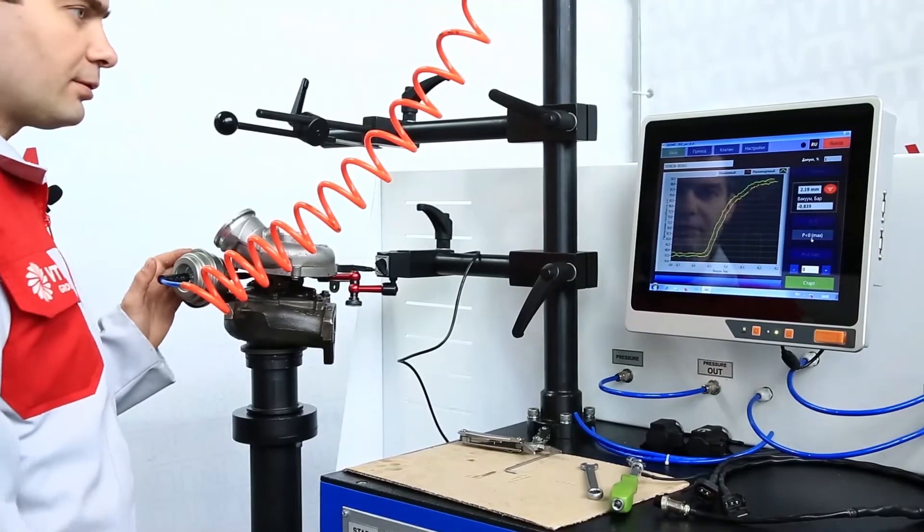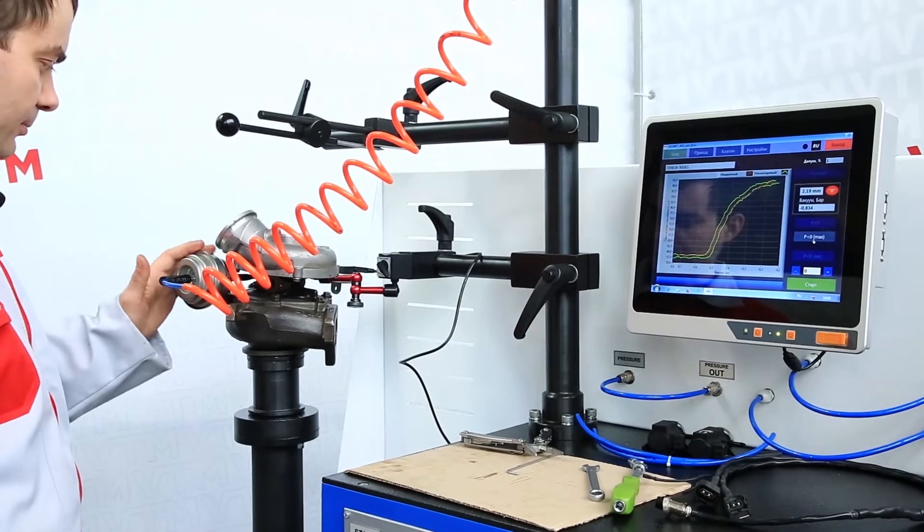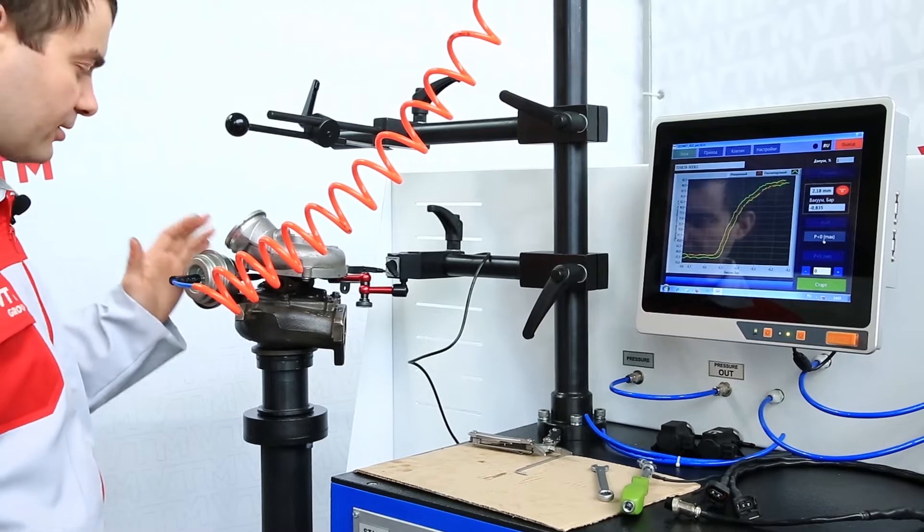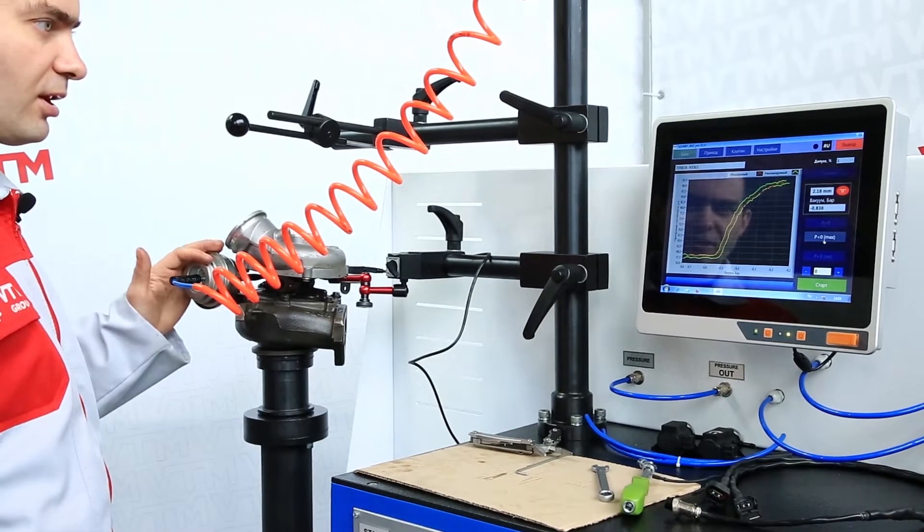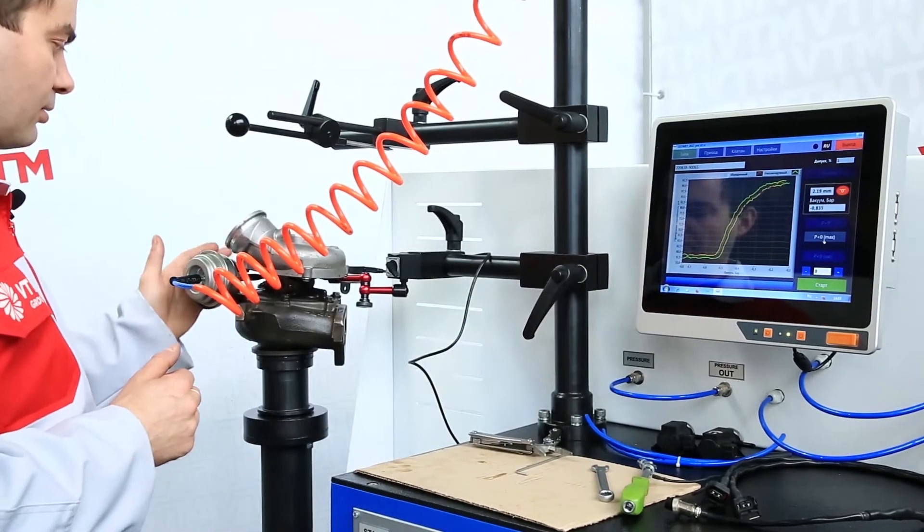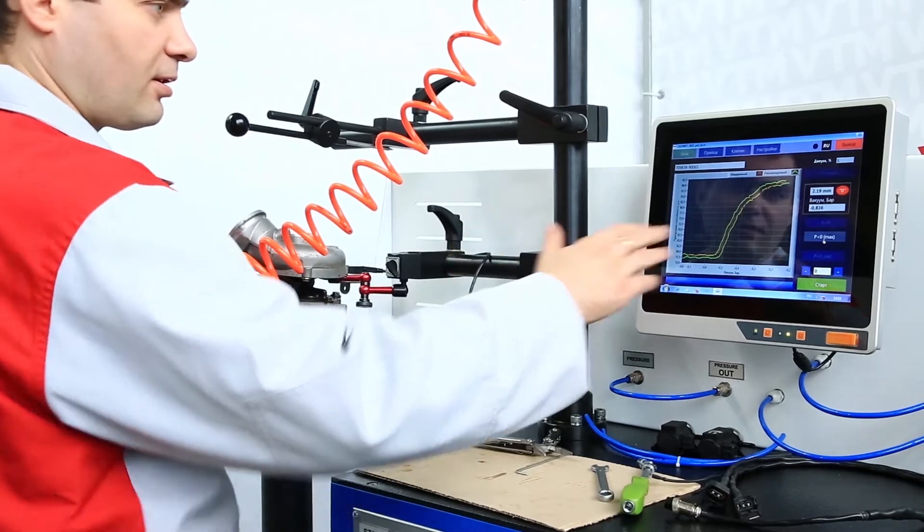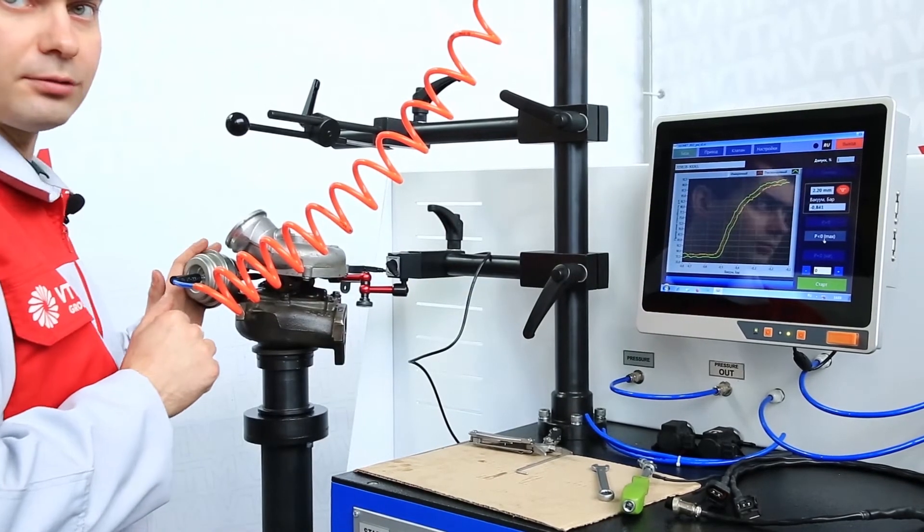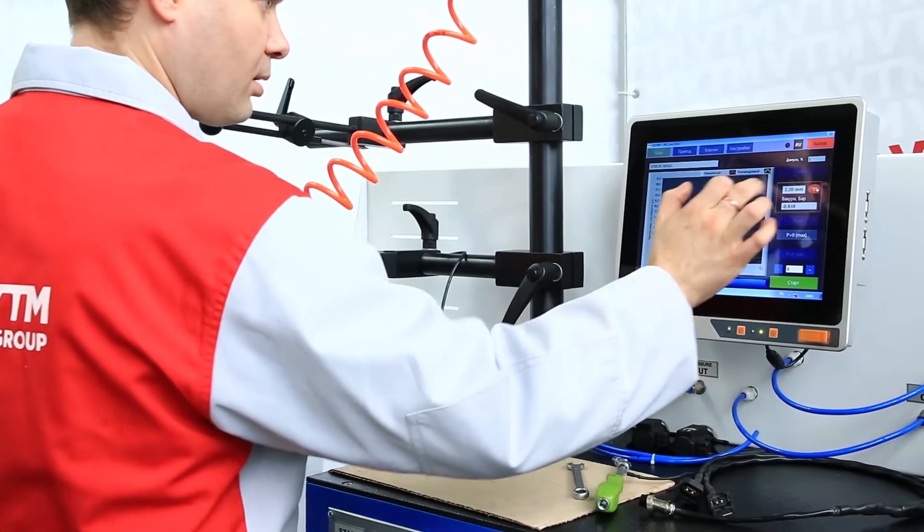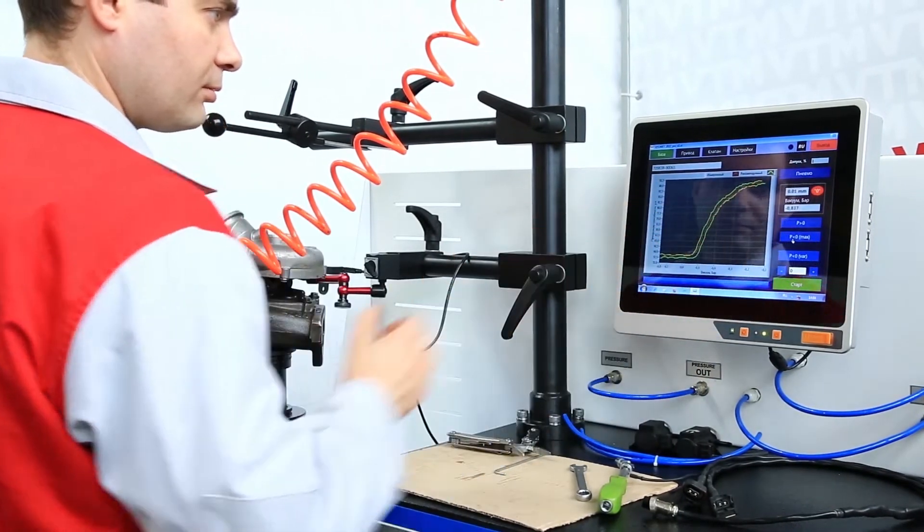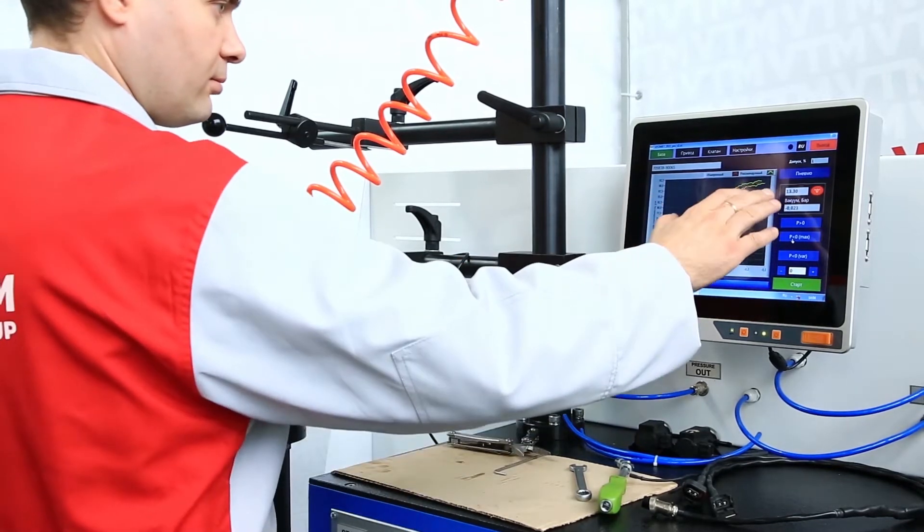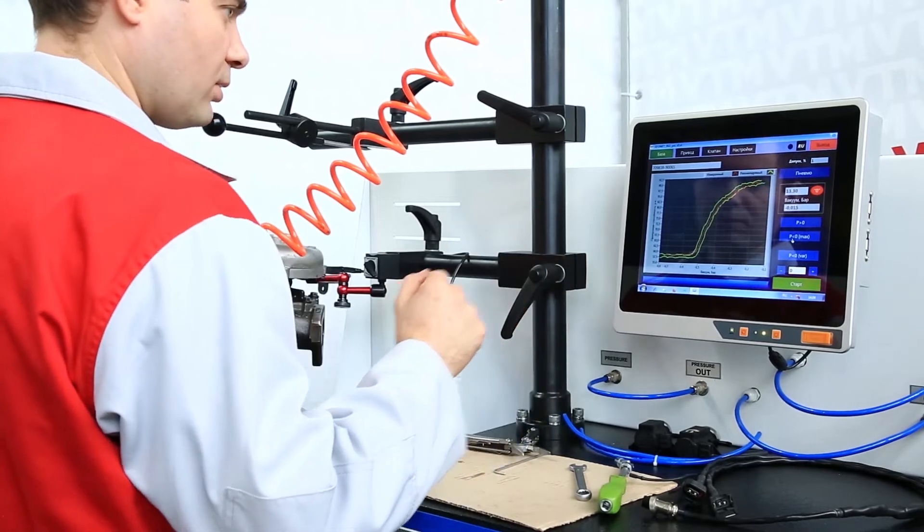According to the electronic indicator, we can evaluate the operation of the vacuum actuator itself. To do this, there are corresponding tables that indicate which vacuum value we can get. We can reset and see the total stroke. In this case, we see that the stroke of the vacuum actuator is 13.3 millimeters.